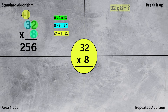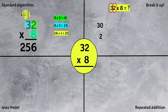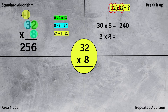Now let's break it up. We have 32 times 8. We can break up the 32 into tens and ones — 3 tens is 30, and 2 ones is 2. Now we can distribute the 8 with the 30 and with the 2. So we do 30 times 8, which is 240, and 2 times 8 is 16. Adding 240 plus 16 gives us 256.